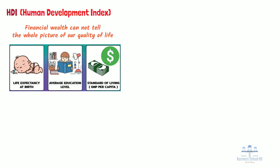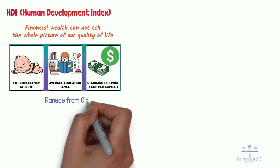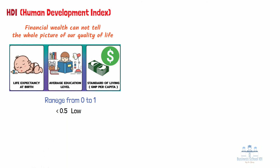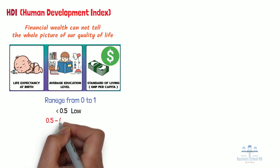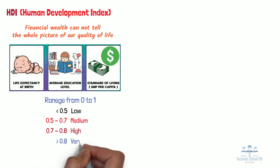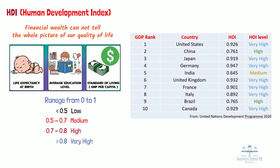According to the United Nations, the HDI is scaled from zero to one. Countries scoring less than 0.5 are classified as having low human development. Those scoring from 0.5 to 0.7 are classified as having medium human development. Scores from 0.7 to 0.8 are classified as having high human development, and those that score above 0.8 are classified as having very high human development. Here is the HDI index for the top 10 largest economies in the world for 2020. The HDI for all developed countries listed are classified as very high. Developing countries such as China and Brazil are classified as high, while India is classified as medium.